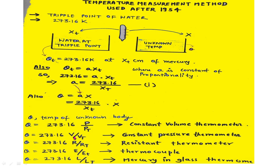Similarly, in a constant pressure gas thermometer, volume is the thermometric property, and the temperature of the unknown body is given by theta equals 273.16 times (v / v_t), where v is the volume of gas corresponding to the unknown body temperature in the bulb and v_t is the volume corresponding to the triple point temperature in the constant pressure gas thermometer.